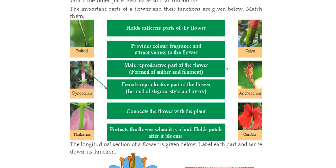Next to pedicel you can see the thalamus. See here — this thickened part at the base is known as the thalamus. What is the function of thalamus? The thalamus holds the different parts of the flower. That is the function of the thalamus.